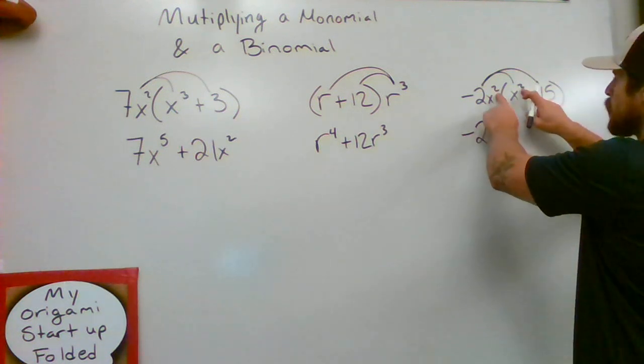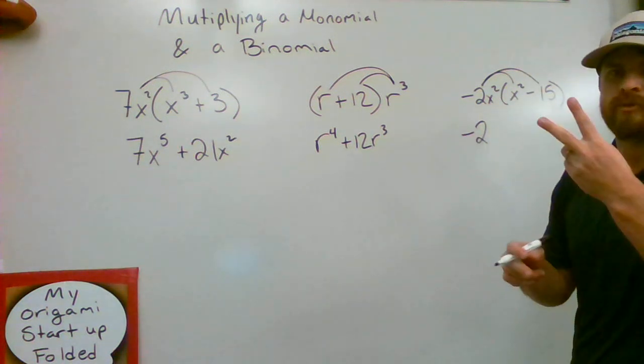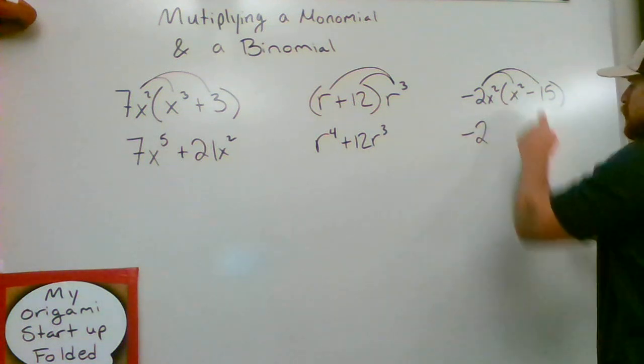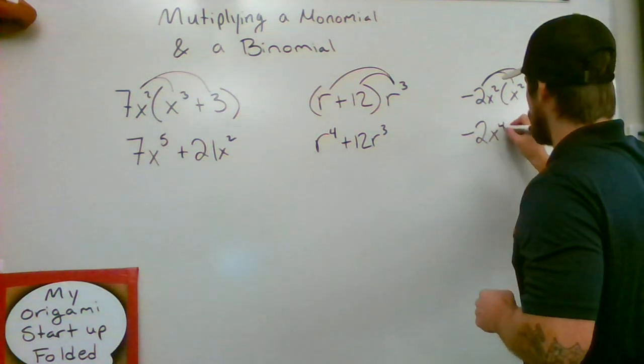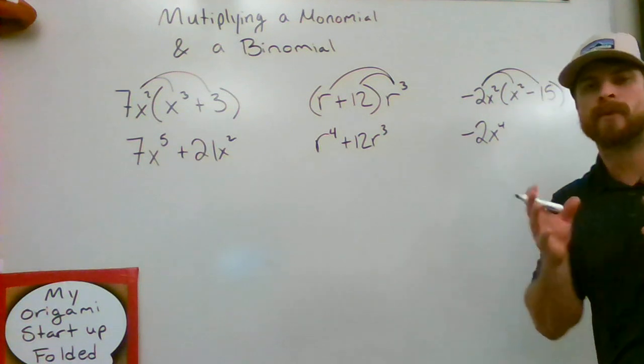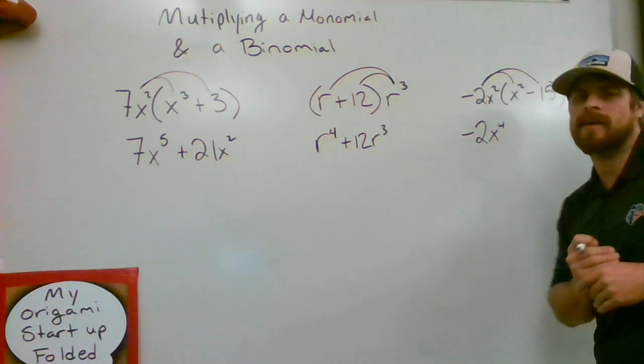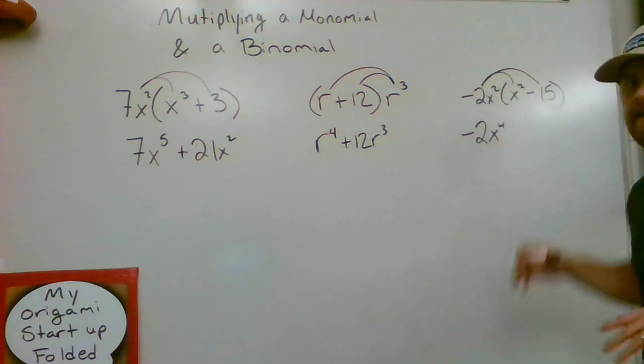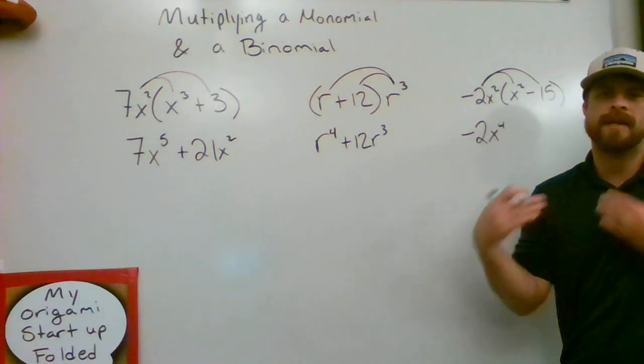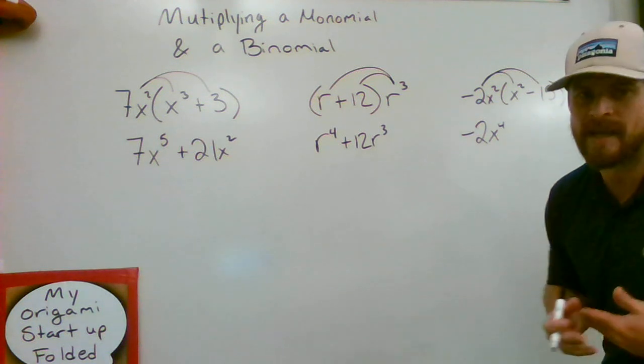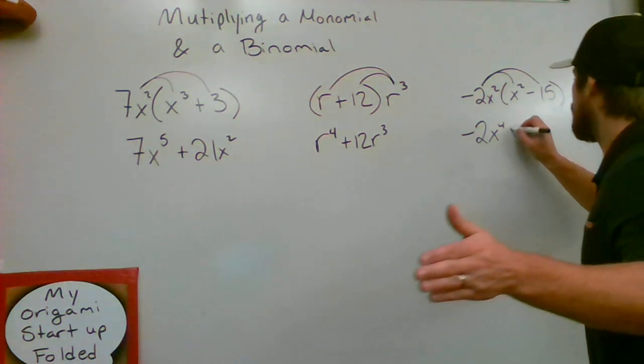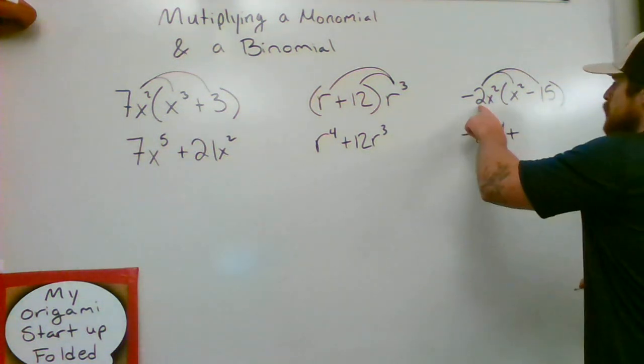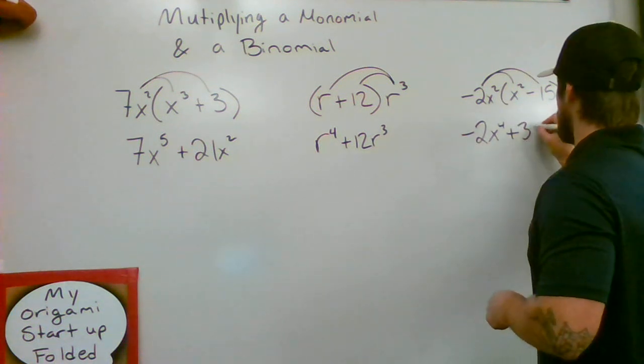While these x²s, when multiplied together, we need to add the 2s. That 2 plus that 2 makes x⁴. And again, that is because of the product rule of exponents. And last but not least, we have this -2x² times this -15. Ask yourself the question: a negative times a negative equals? Bingo. Positive. And -2 times -15 would make positive 30. Don't forget to include the x² that is already attached. And because there's no x on the 15, that would be our final result.